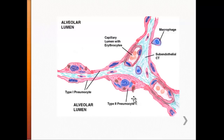Surfactant decreases surface tension to prevent the alveoli from collapsing, but it also has antimicrobial properties — it's quite a hostile place for pathogens to survive. Recently it was found that surfactant contains two proteins that are very important to our innate defenses: SPA and SPD. These proteins opsonize bacteria by attaching to various sugars located on the surface of the bacteria, facilitating opsonization and making bacteria very susceptible to phagocytosis.